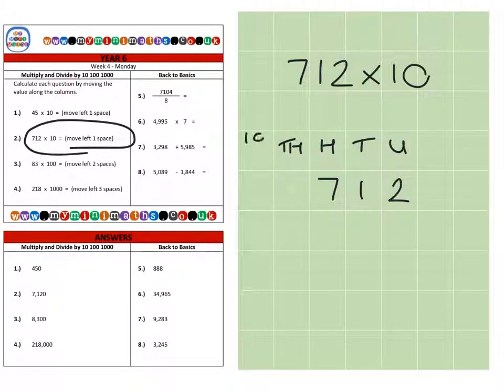Thousands, ten thousands, and so on. And this time, we're going to be multiplying by ten again, so that's one space bigger.